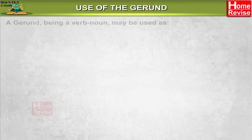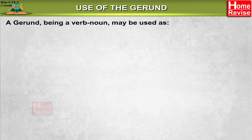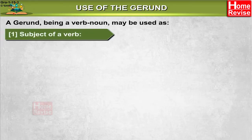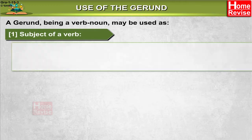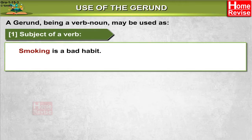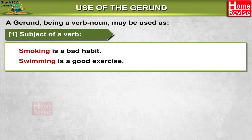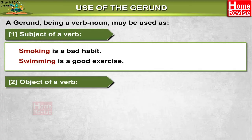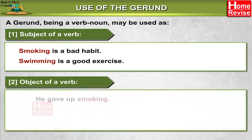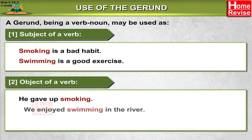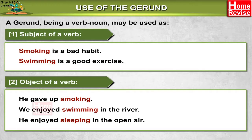Use of the gerund. A gerund, being a verb-noun, may be used as: 1. Subject of a verb — 'Smoking is a bad habit'; 'Swimming is a good exercise.' 2. Object of a verb — 'He gave up smoking'; 'We enjoyed swimming in the river'; 'He enjoyed sleeping in the open air.'